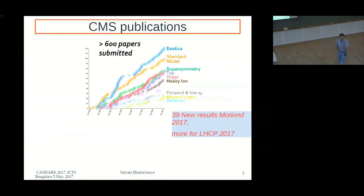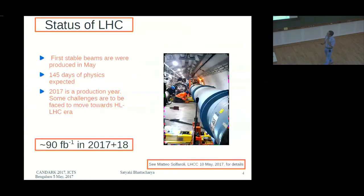The task is challenging, because CMS so far has produced more than 600 papers, Exotica topping the list, a lot of standard model results, and then about 70 papers on supersymmetry and 60 on Higgs boson. There are 39 new results from Moriand 2017 and more from LHCP. I will only be able to give a very biased snapshot of all these results, mostly from LHCP.